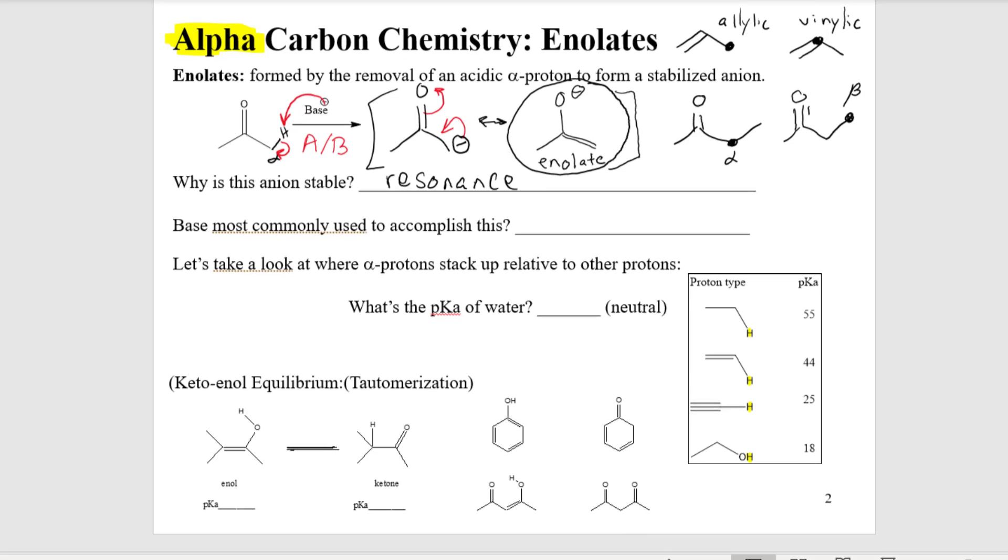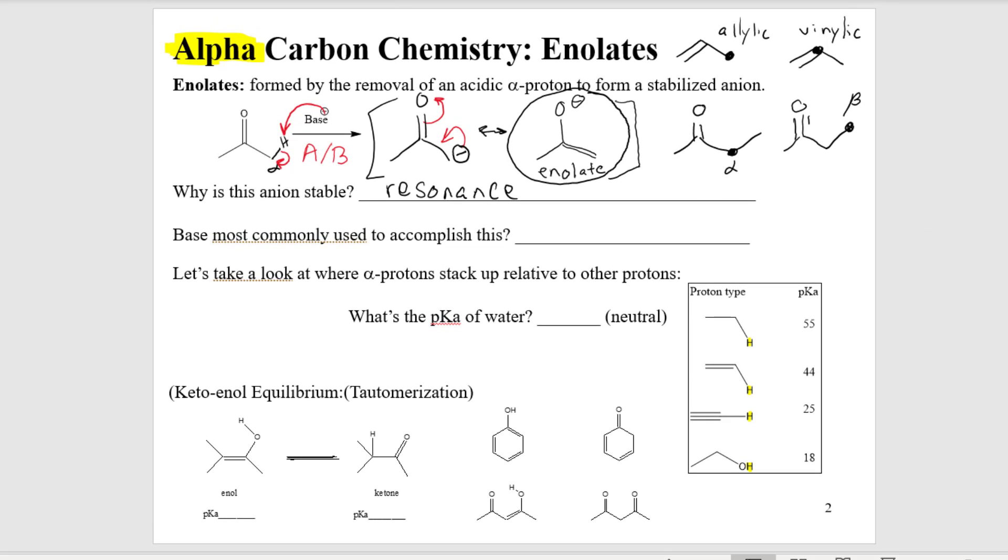Let's talk about the bases that we can use to actually afford these enolates. The bases most commonly used are LDA or a methoxide or sodium ethoxide salt. I'm going to list these here right now. You're probably wondering what the heck is LDA. Don't worry. We're going to talk about it in a subsequent slide.